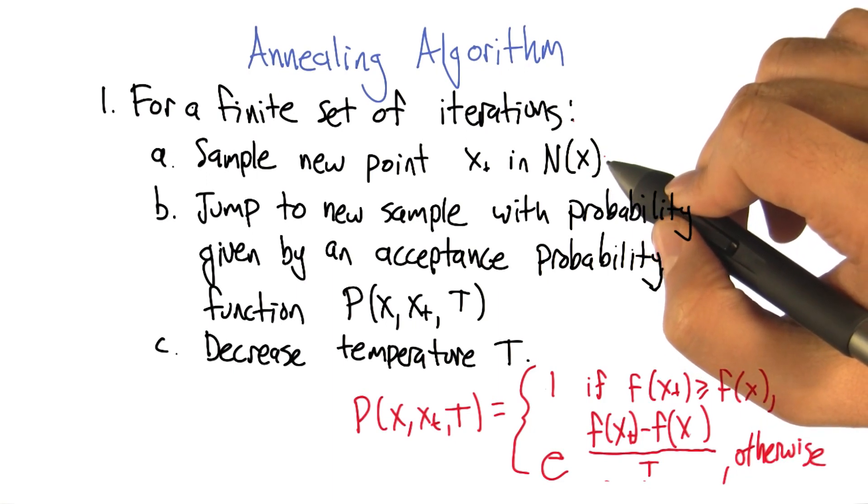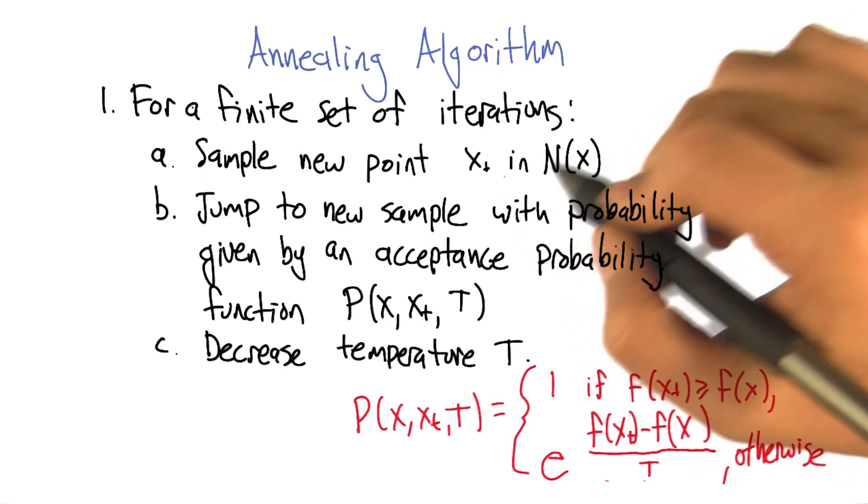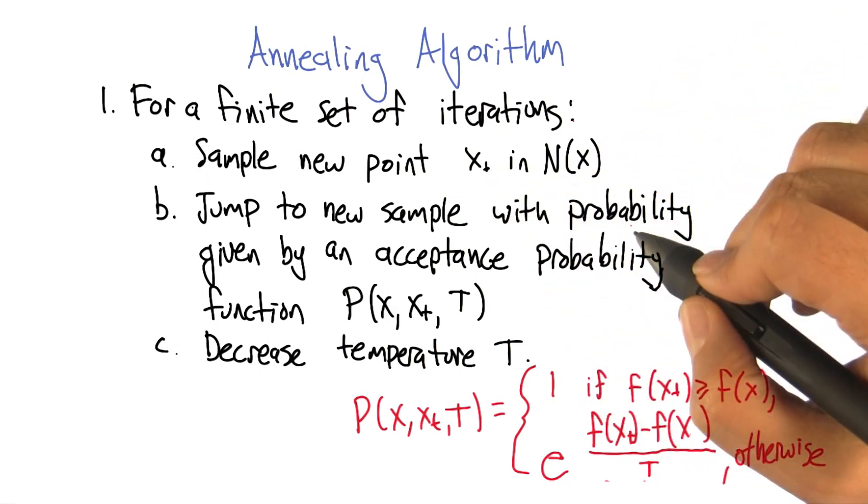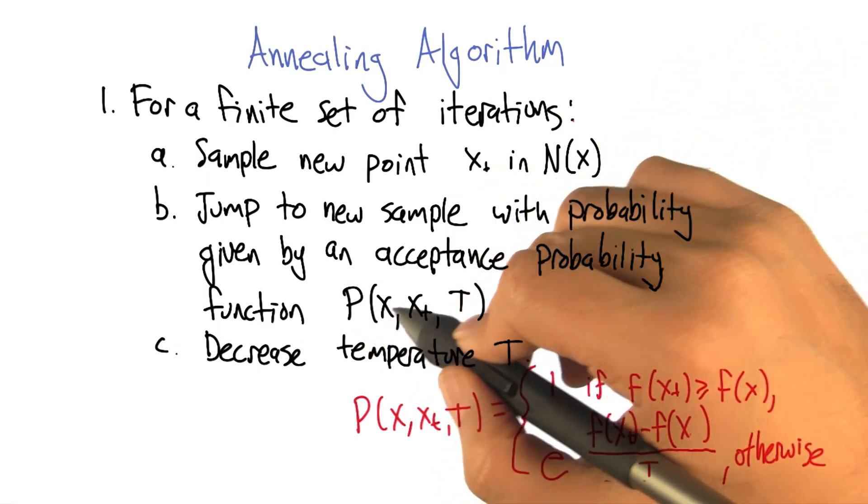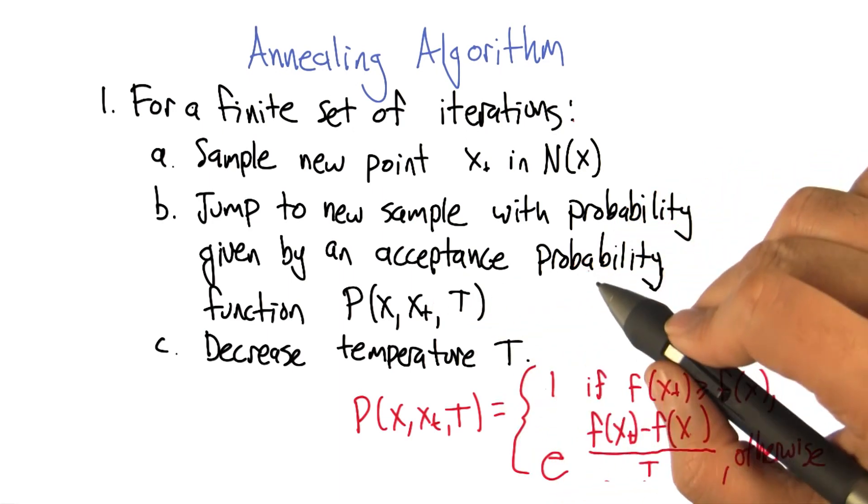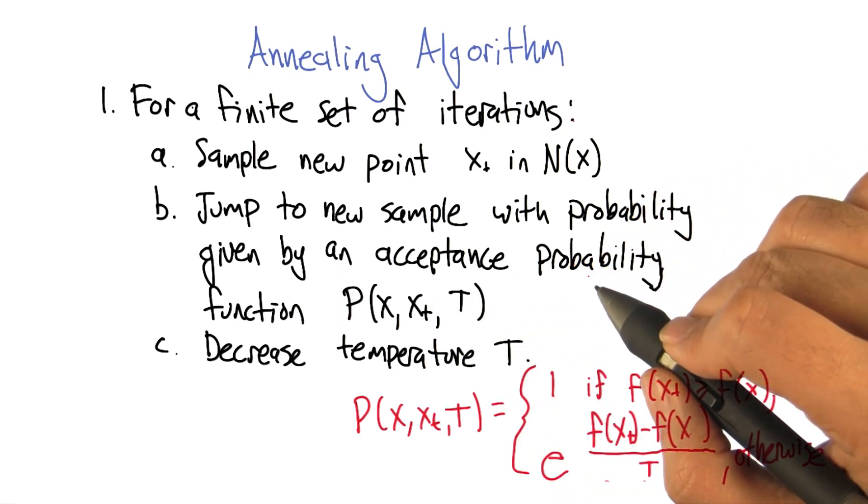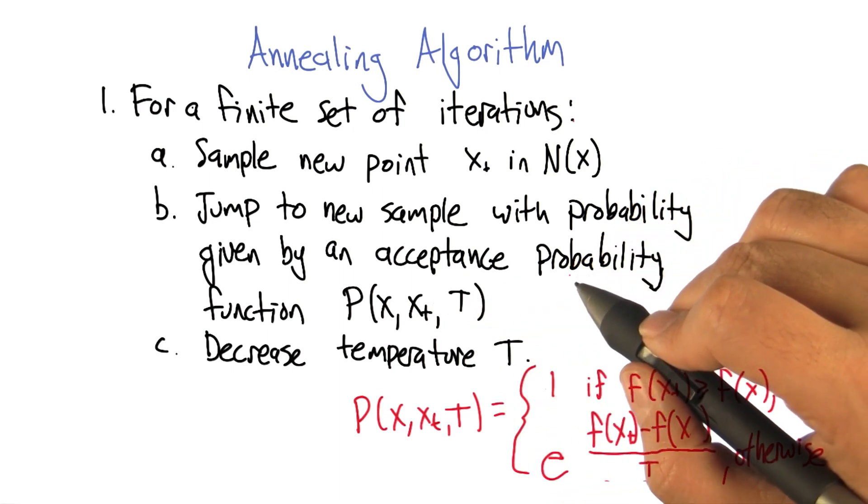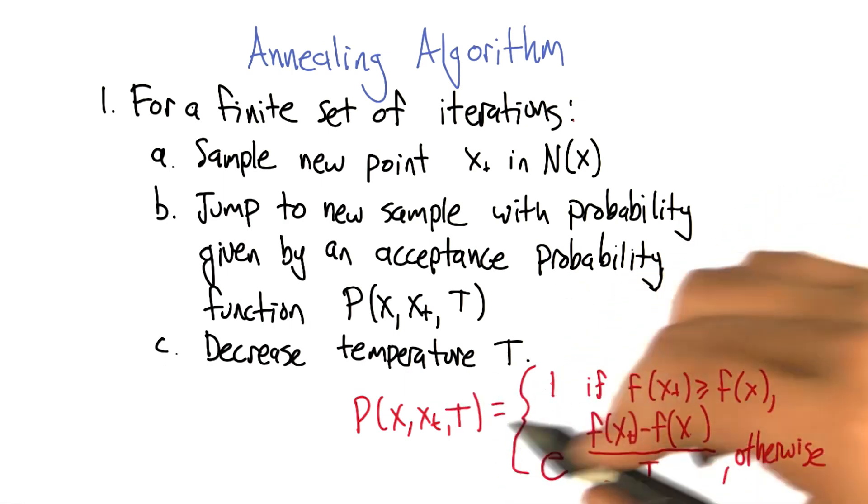And then what are we going to do? We're going to move our x to that x_t probabilistically. So in particular, we've got this probability function P(x, x_t, T) which is going to help us decide whether or not to actually make the move, and the form of that function is written out here.